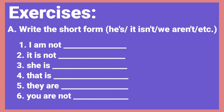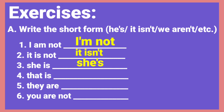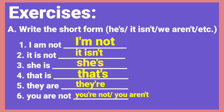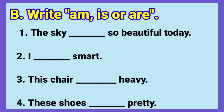Exercise A: Write the short form, like he's, it isn't, we aren't, etc. Here are the answers. Number one: The short form of I am not is I'm not. Number two: It is not is it isn't. Number three: She is — the answer is she's. Number four: That is — the right answer is that's. Number five: They are — the correct answer is they're. Number six: You are not — you may answer you're not or you aren't. Exercise B: Write AM, IS, or ARE.